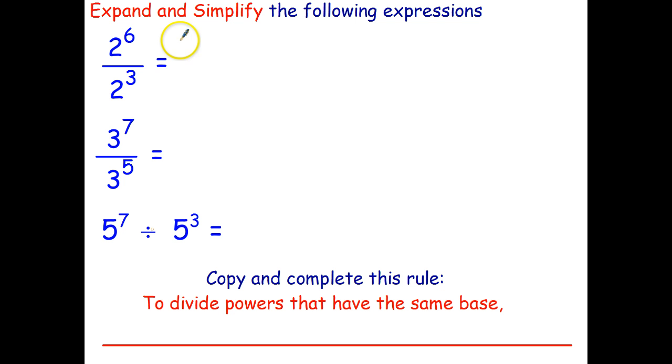Okay let's do it by expanding. So 2 to the power of 6. I've got to multiply six twos together: 1, 2, 3, 4, 5, I need one more. And on the bottom I have three twos. 2 times 2 times 2. Okay now we need to simplify this.